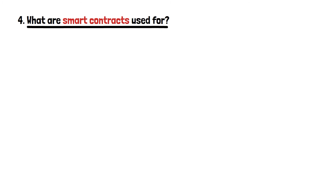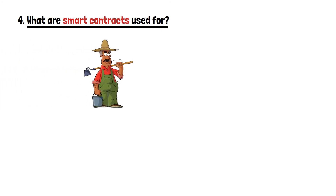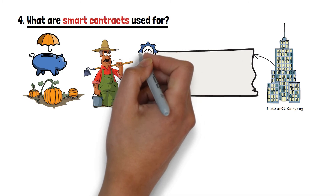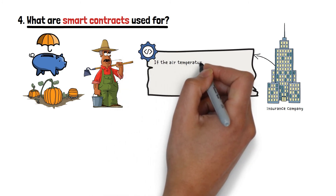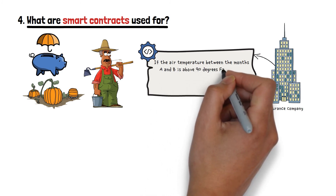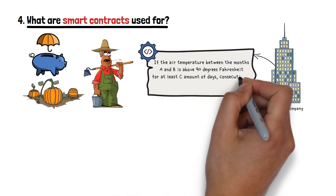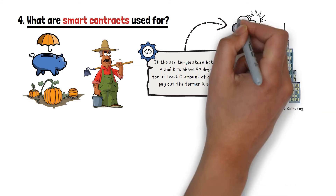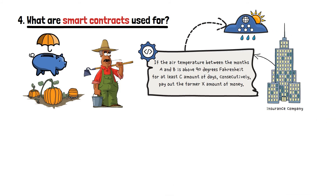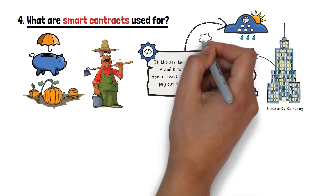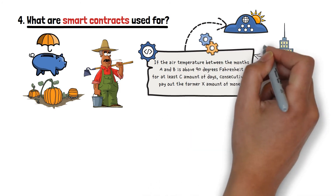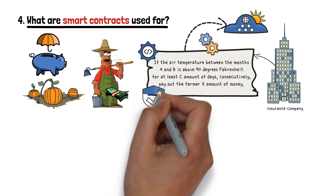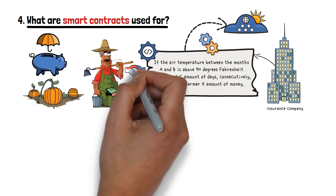For starters, let's say that you're a farmer who wants to insure their crops in case there's a drought this year. The insurance company uses a smart contract for your insurance with these terms: if the air temperature between months A and B is above 90 degrees Fahrenheit for at least C amount of days consecutively, pay out the farmer X amount of money. The insurance company would then make the smart contract track local weather news platforms that have high reliability. Thus, the entire process would be automatized. If there was a drought that year, you would automatically receive your insurance payout — and nobody will ever change the rules that you, as the farmer, agreed to.